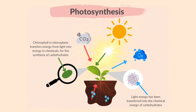Absorbed light energy from the sun is used to convert carbon dioxide from the air and water from the soil into a simple carbohydrate or sugar called glucose. Oxygen is released as a byproduct. Water is absorbed from the soil by the roots and carbon dioxide is absorbed from the air through the stomata. In the leaf cells, the carbon dioxide and water are combined to make sugar, using energy from sunlight absorbed by the green pigment chlorophyll. The oxygen escapes from the leaf.